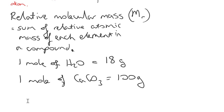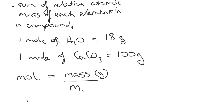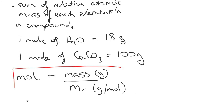So we can now create a formula for working out the moles of a substance. The number of moles — which I shorthand write as MOL — equals mass in grams divided by the MR, which is in grams per mole. So to work out the number of moles of any substance, we simply take the mass of that substance in grams and divide it by that compound's relative molecular mass.